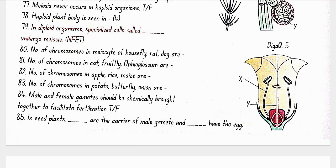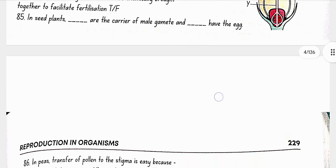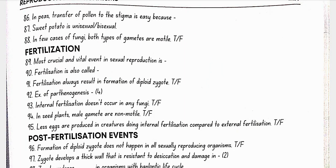Male and female gametes must be physically brought together to facilitate fertilization, not chemically. In plants, pollen grains are the carriers of male gametes and ovules contain the egg. In peas, transfer of pollen grains to the stigma is easy because the anther and stigma are located close to each other as the flower is bisexual. Sweet potato is bisexual. In some cases of fungi, both types of gametes are motile — true.